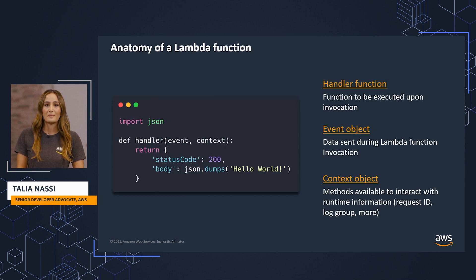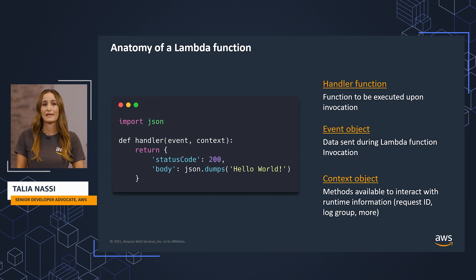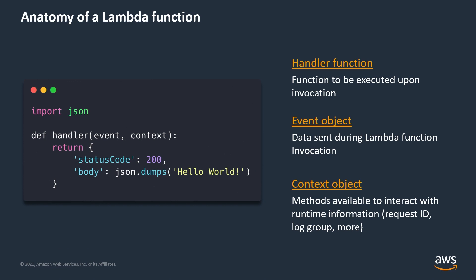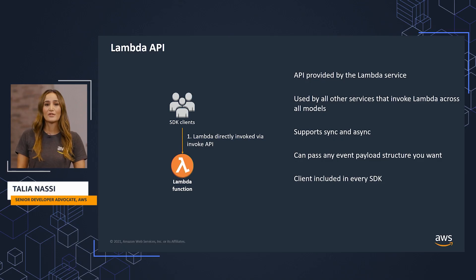Lambda functions are composed of three parts: the handler function, the event object, and the context object. The handler function is the function that's executed when the Lambda function is invoked. The event object is the JSON object filled with data that is sent to Lambda during function invocation. The context object contains methods available to interact with runtime information, such as the request ID or the log group. Lambda can run your functions in response to events from other AWS services, or you can use the Lambda API. The Lambda API is the way that all services interact with your code, and all invocations go via the API regardless of which invocation model is used.